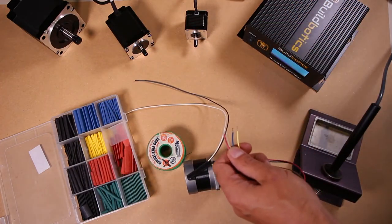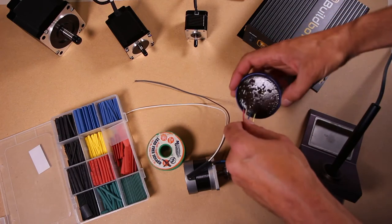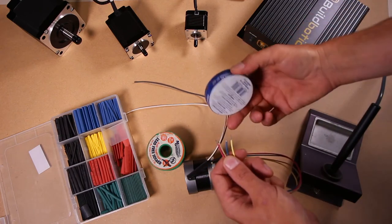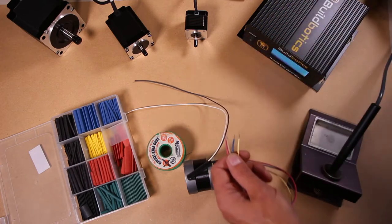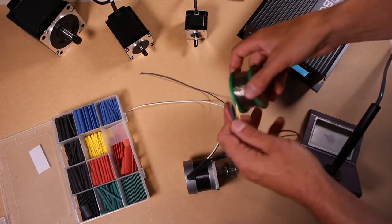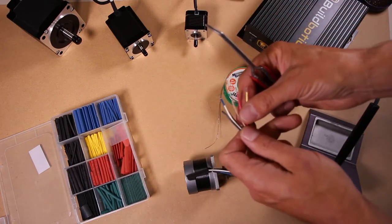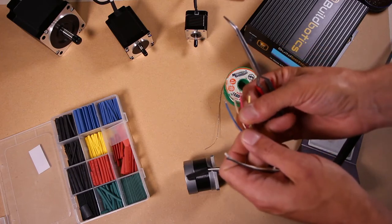I also like to use solder flux to help the solder flow on the wire. So we'll dip it in this solder flux. And then I'll use this tool to help me hold the wires in place while I solder them.